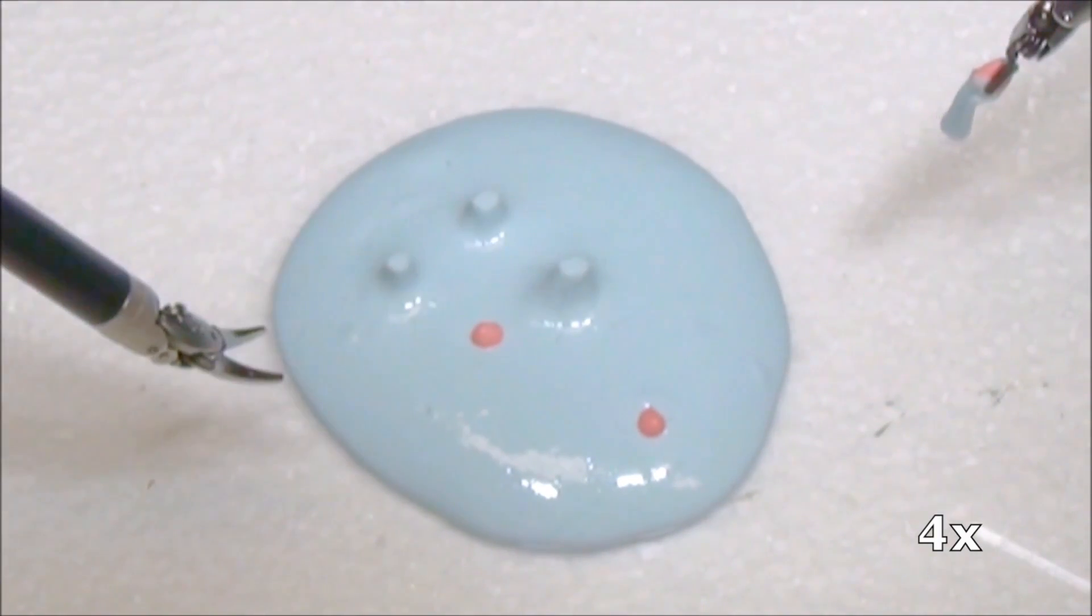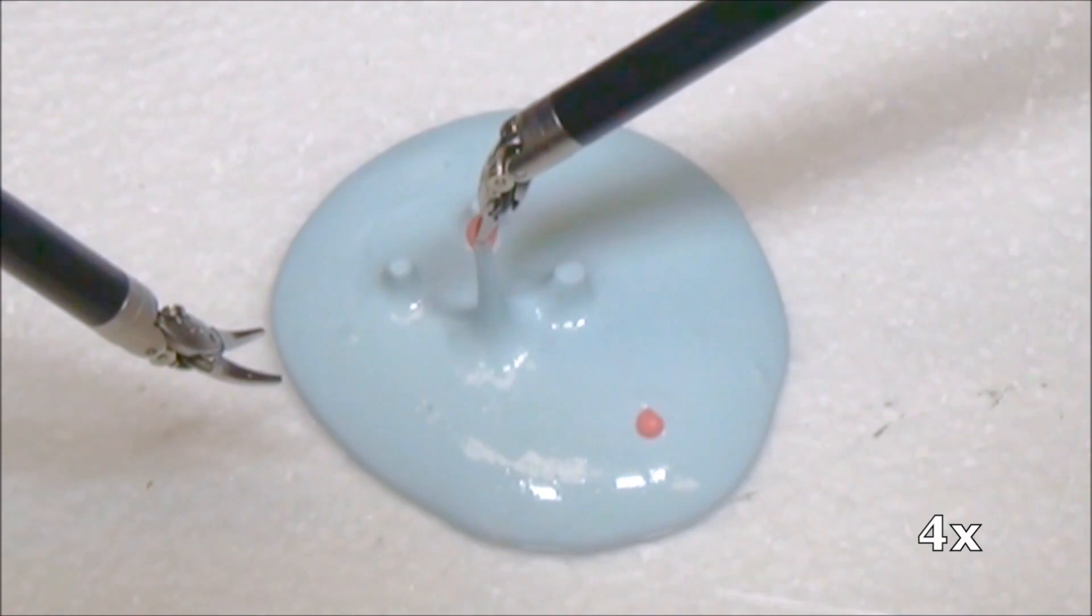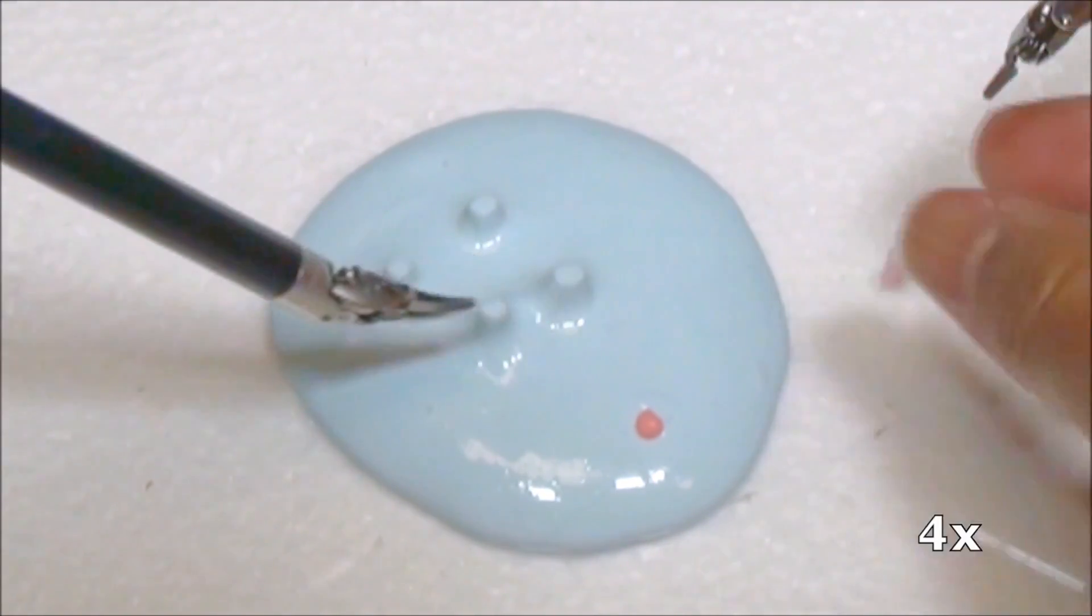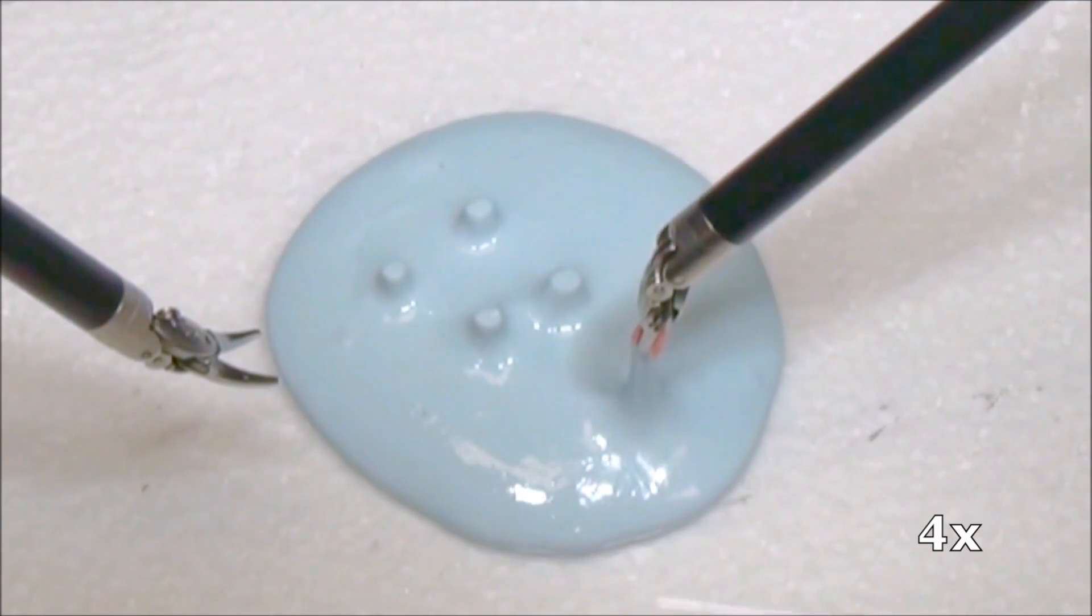These targets represent damaged or tumorous tissue. A computer vision system identifies the target spheres and guides the robot to extract them. In 50 trials, the robot achieved a 96% success rate.